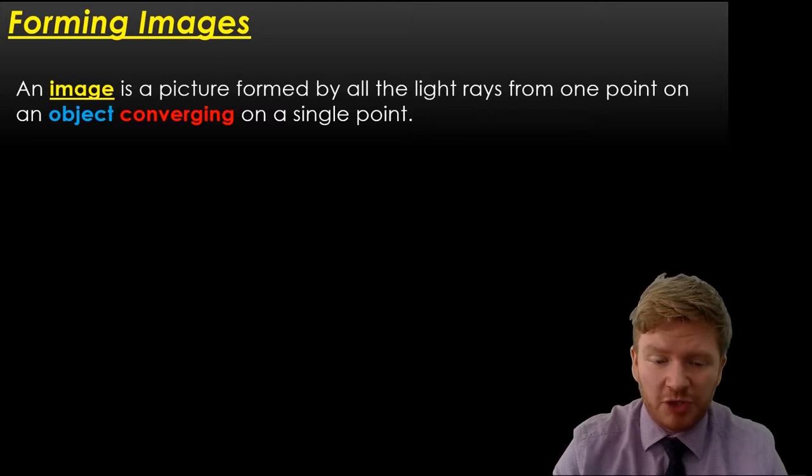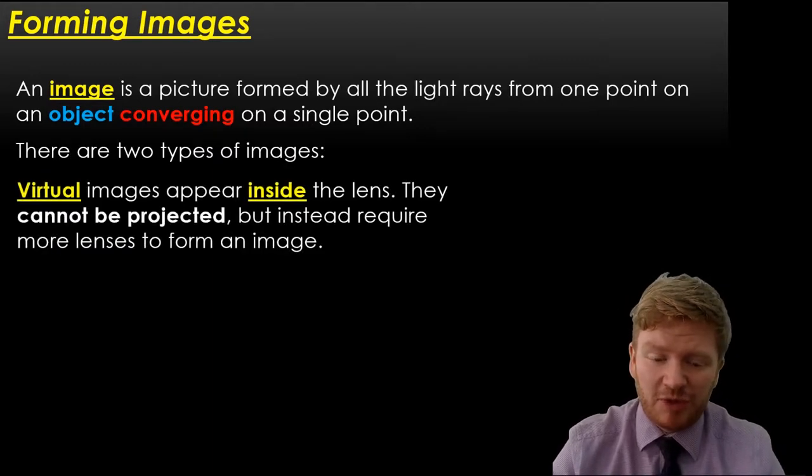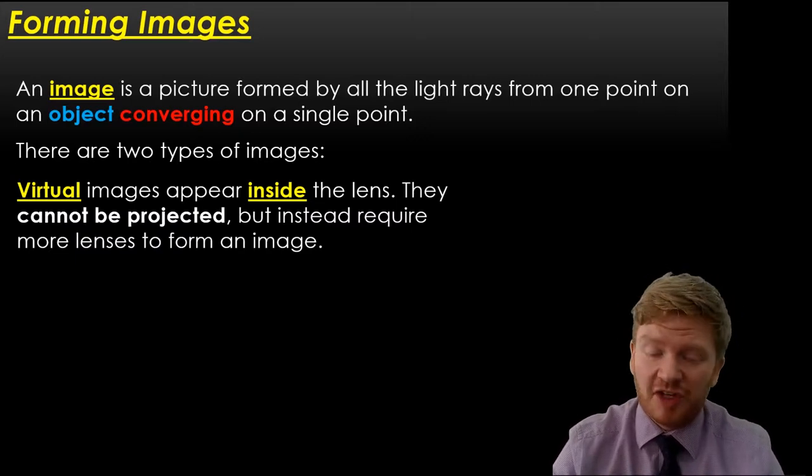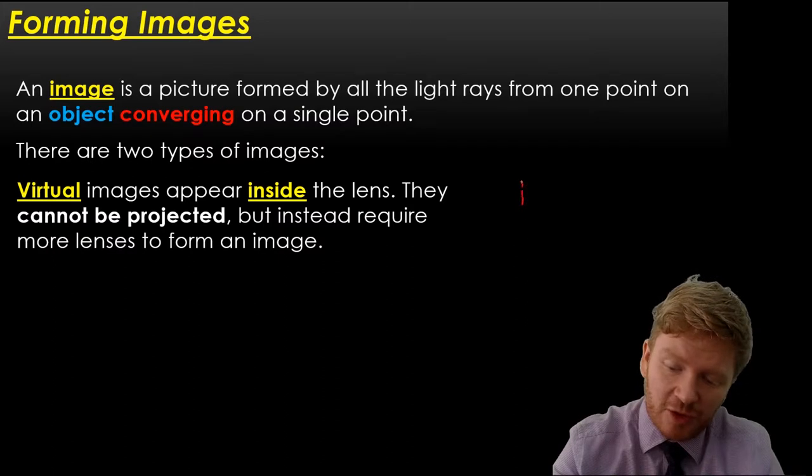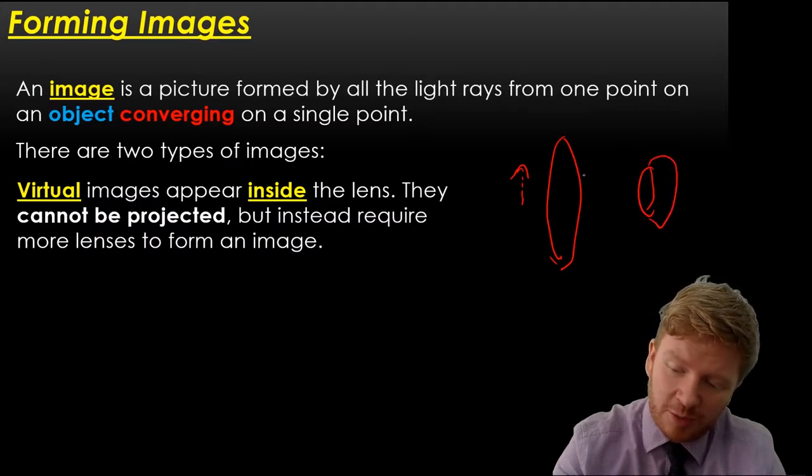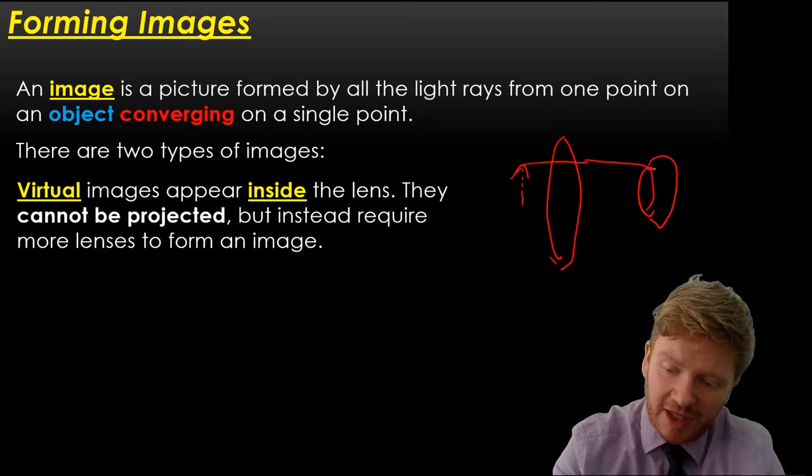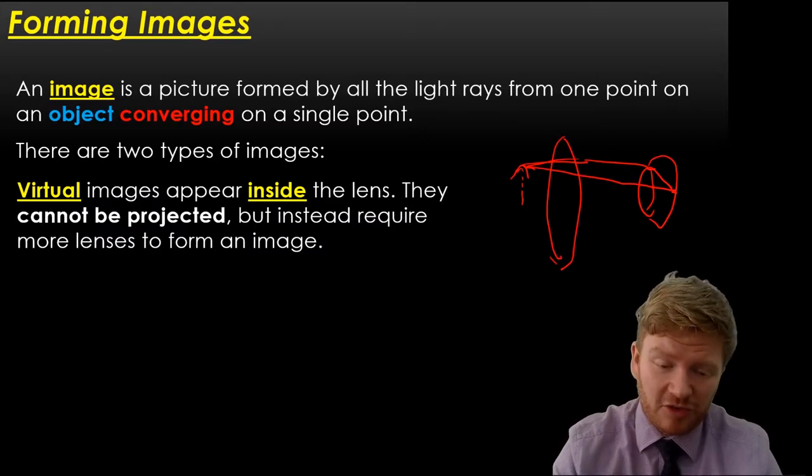So a few little recaps for you. First of all, you should get the idea that an image is formed when all the light rays from one point of an object all converge on one single other point. And we have two types. We have virtual images that appear inside the lens or inside the object. Now you can't project a virtual image. So that might immediately start you to think, well, how do we see it then? And what you need to remember is that with a virtual image, you have an object here that will appear to be, say, inside your lens.